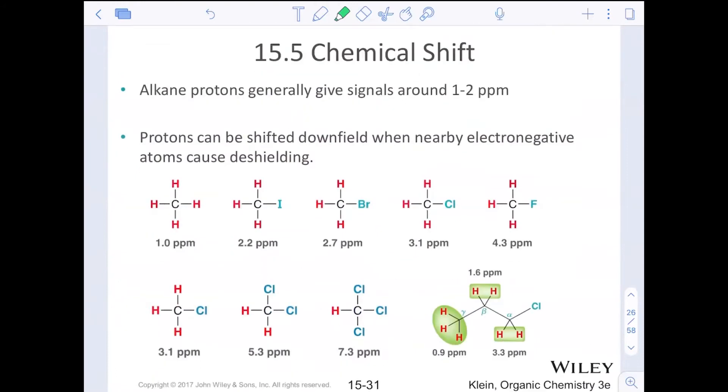Alkane protons generally give signals around one to two ppm. Things that are non-polar are shielded because the electrons are still around the nuclei. As we start to incorporate more polar atoms, the electron density is being pulled more towards the halogen. The more polar that halogen becomes, notice what happens to the shift. More electronegative, more deshielding of those protons. The red protons are going to appear further downfield because they are more deshielded.